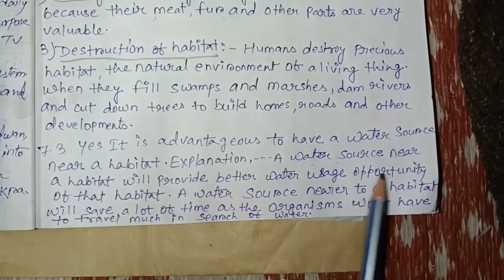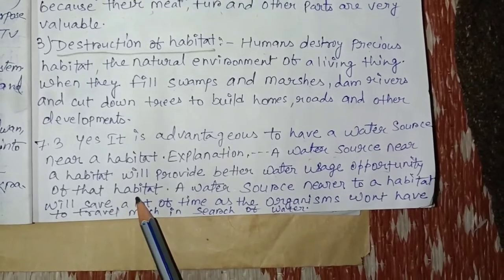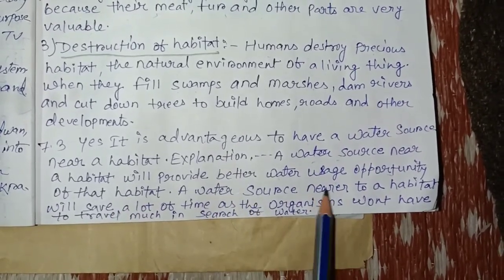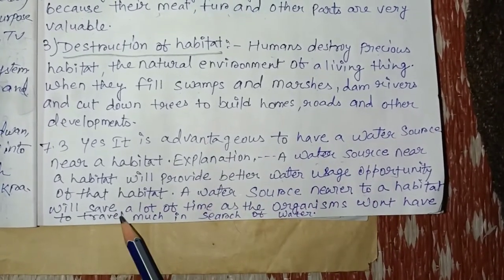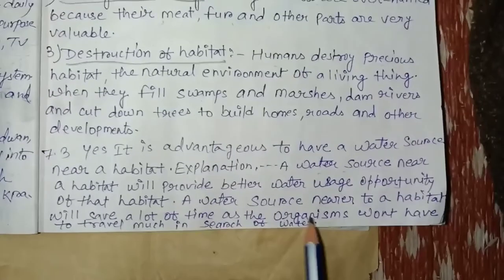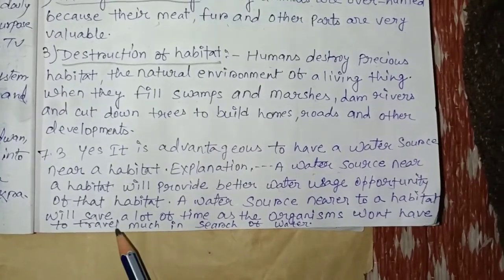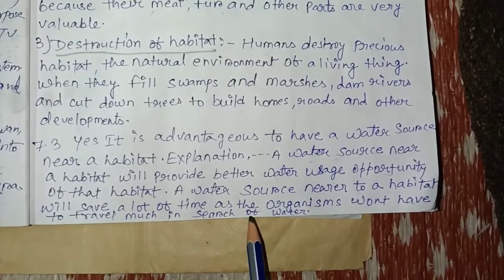Explanation: A water source near a habitat will provide better water usage opportunity for that habitat. A water source nearer to a habitat will save a lot of time as the organism won't have to travel much in search of water.